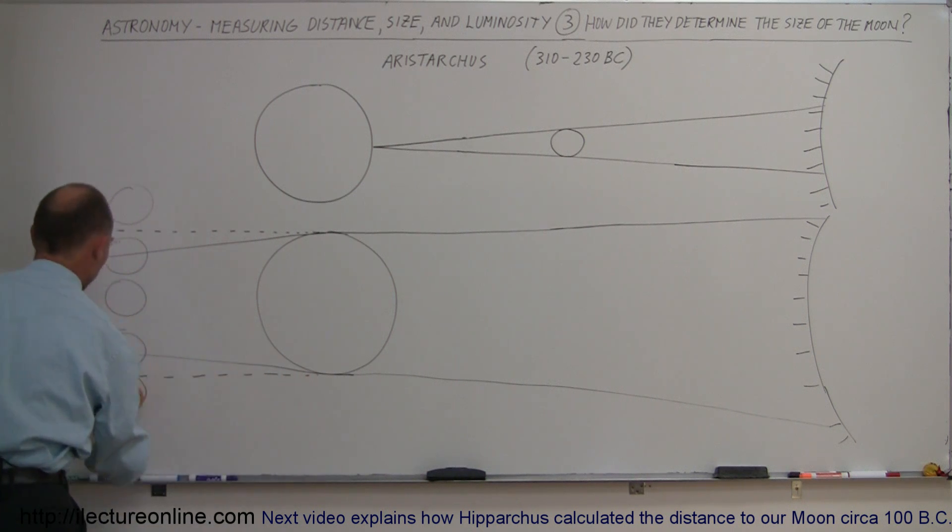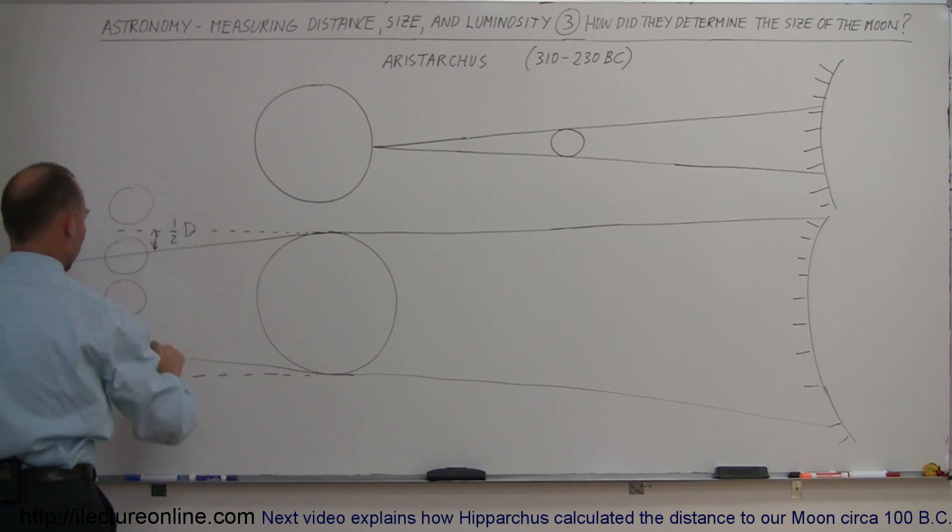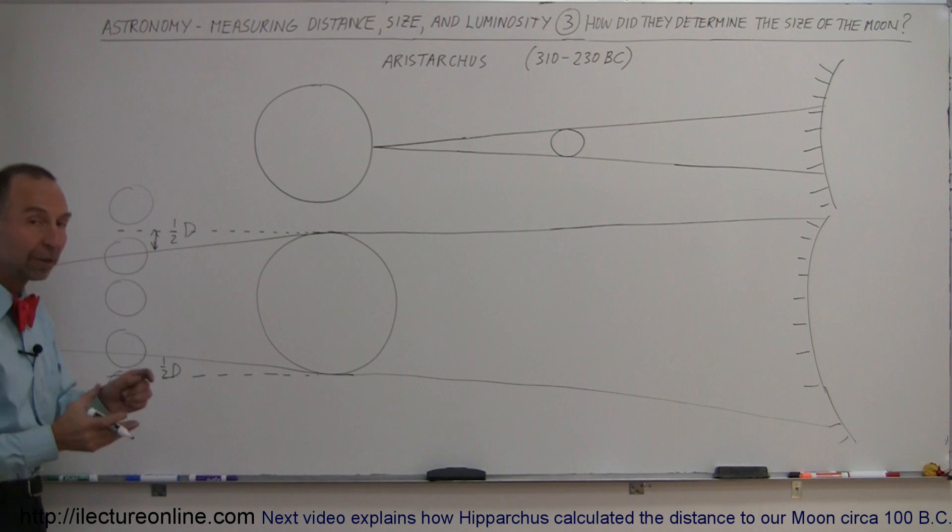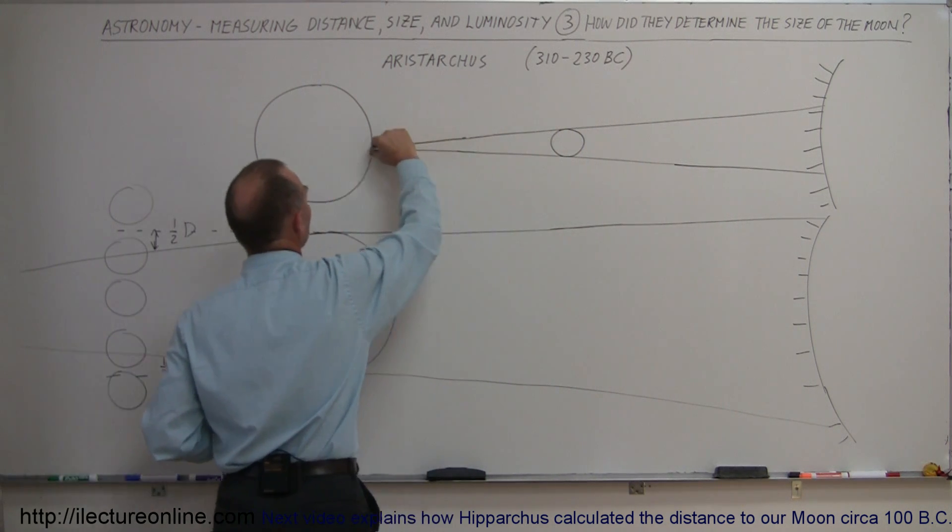So what he assumed then was that this right here was a half diameter of the moon, and this was one half diameter of the moon. So together forming a full diameter of the moon, which is the amount of taper the moon shadow has by the time it reaches the Earth.